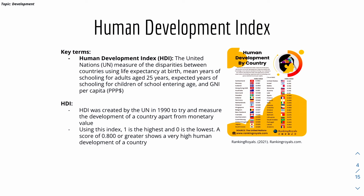Next we look at the Human Development Index, or HDI. It was created by the United Nations as a measure of the disparities between countries, using life expectancy at birth, mean years of schooling for adults aged 25, expected years of schooling for children at school-entering age, and GNI per capita. The HDI was created by the UN in 1990 to measure the development of a country apart from monetary value. On this index, 1 is the highest and 0 is the lowest, and a score of 0.800 or greater shows very high human development.